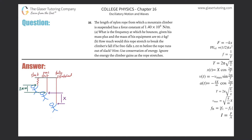Number 35: the length of nylon rope from which a mountain climber is suspended has a force constant of 1.4 times 10 to the 4 newtons per meter. What is the frequency at which he bounces given his mass plus the mass of his equipment are 90 kilograms? We have to find a relationship between the force constant, mass, and frequency. Since they're talking about bouncing, I'll assume it's simple harmonic motion.